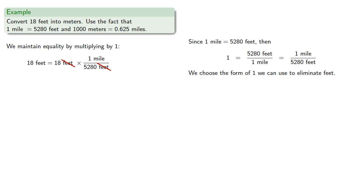So we look to our other conversion factor, and we know that 1,000 meters is 0.625 miles. So again, 1 is any quantity divided by its equal.